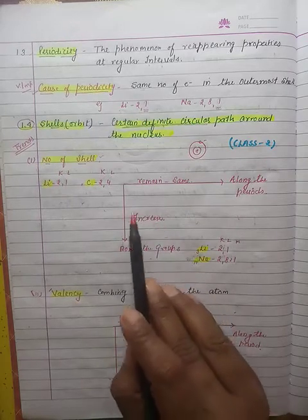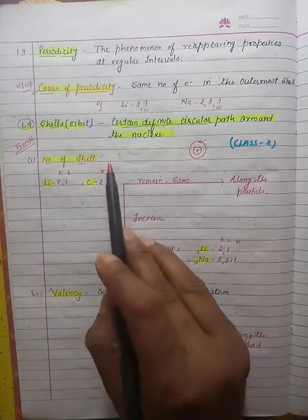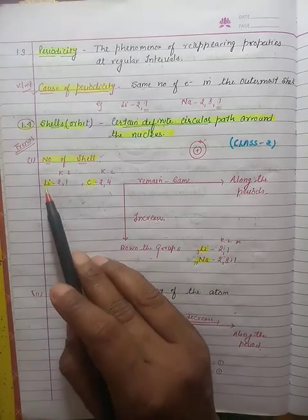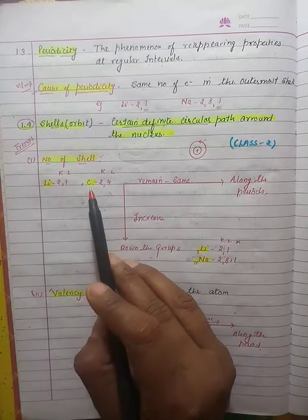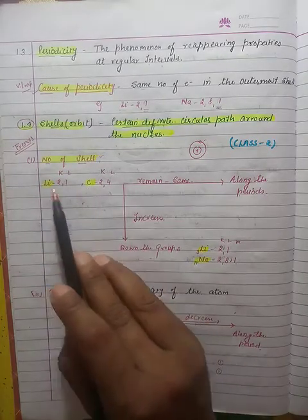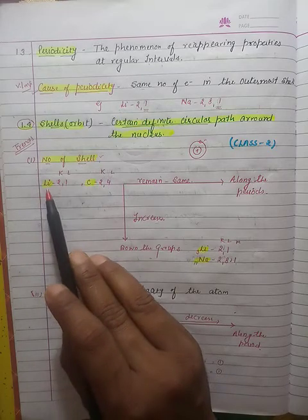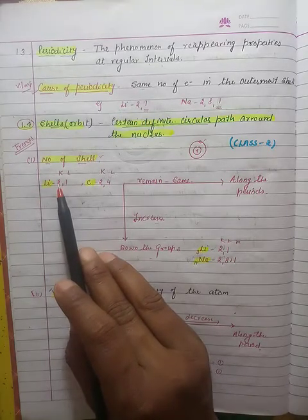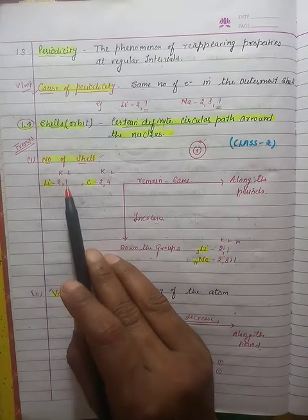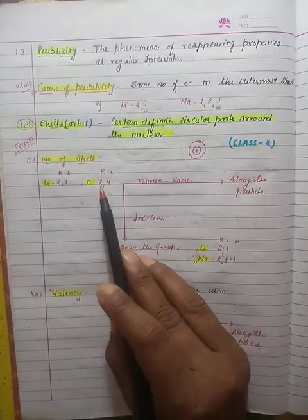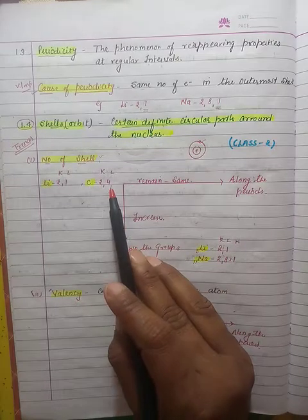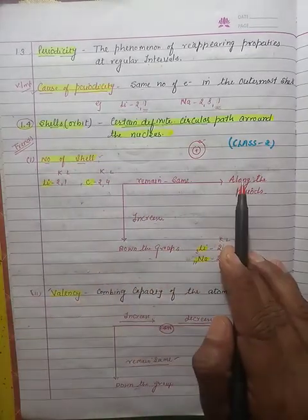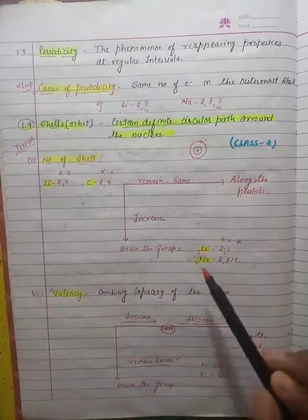Let's make it more clear with the help of examples. Lithium and carbon are from the same period — period number two. The electronic configuration of lithium is: first shell two, second shell one. For carbon: first shell two, second shell four. So you will notice that the number of shells remains the same as we go along the period.